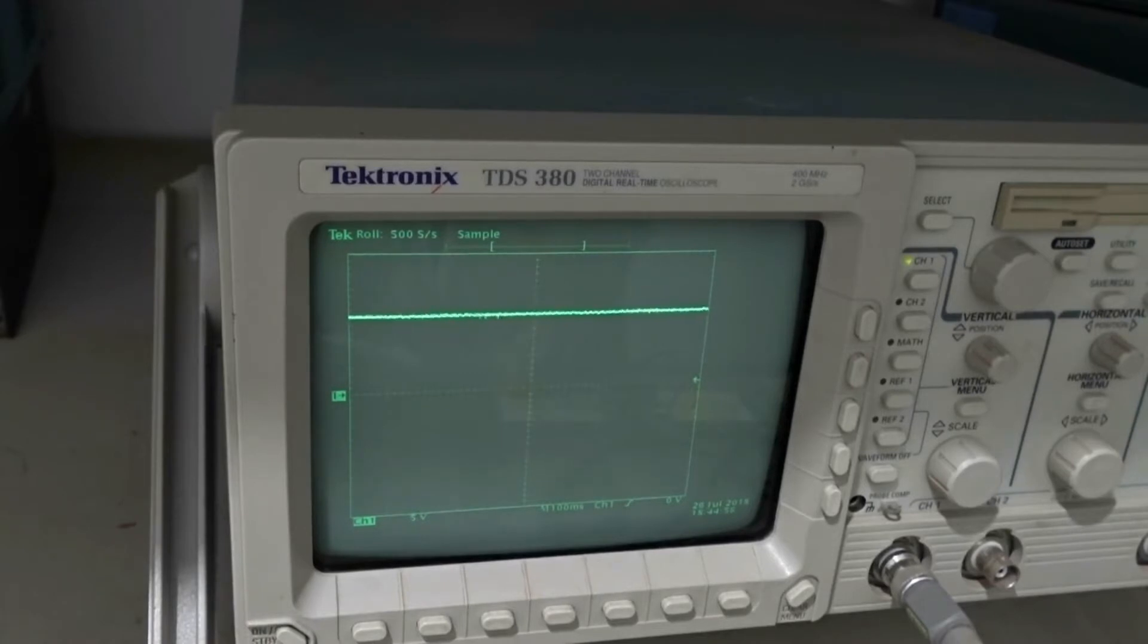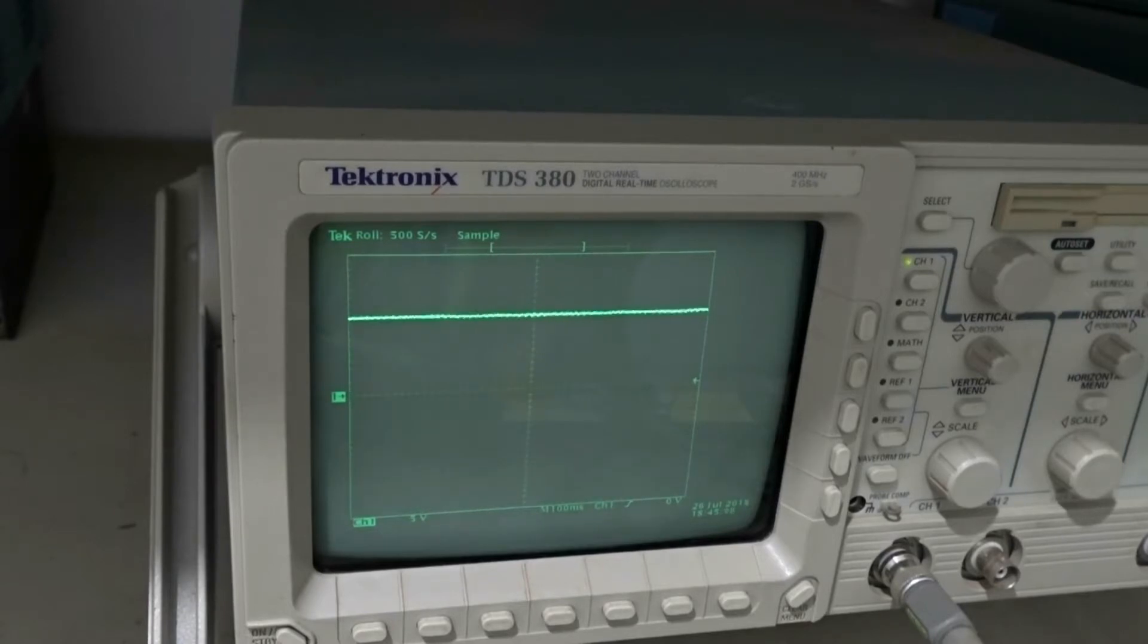Now, our switch is in the off position. When we move the switch to the on position, there is a negative pulse. This is because of the charging of the capacitor. This negative pulse activates our 555 IC.